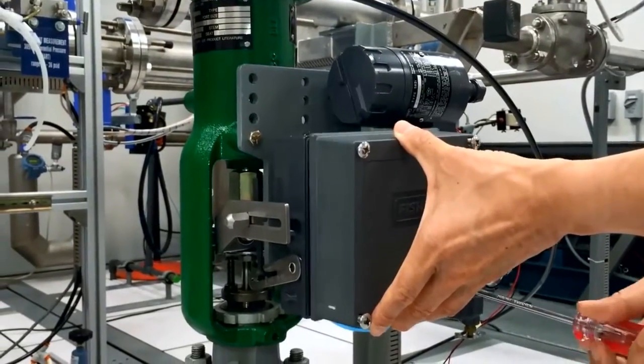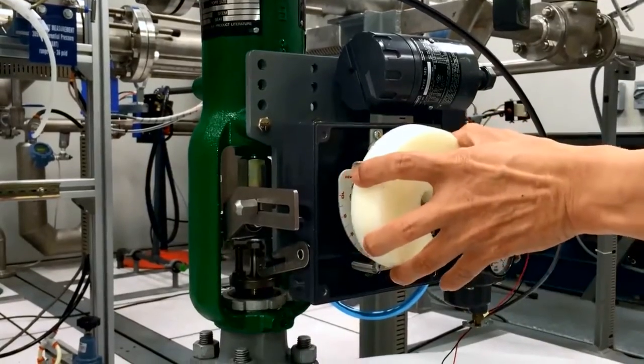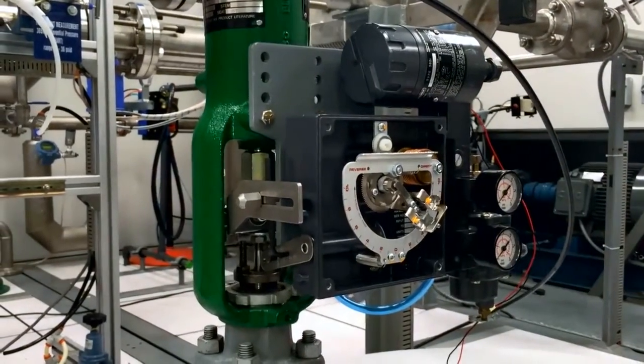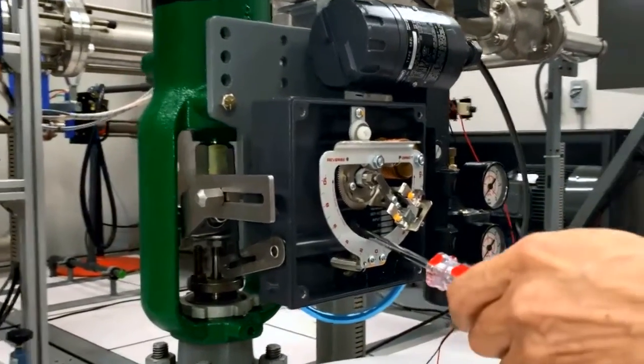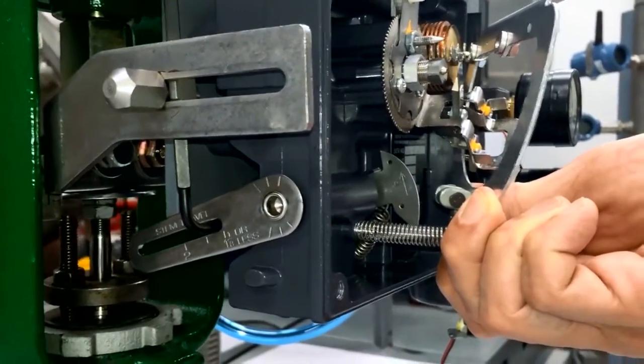With the positioner properly mounted, we can first open the cover and remove the shipping sponge. From here we need to check that the cam is correctly mounted.